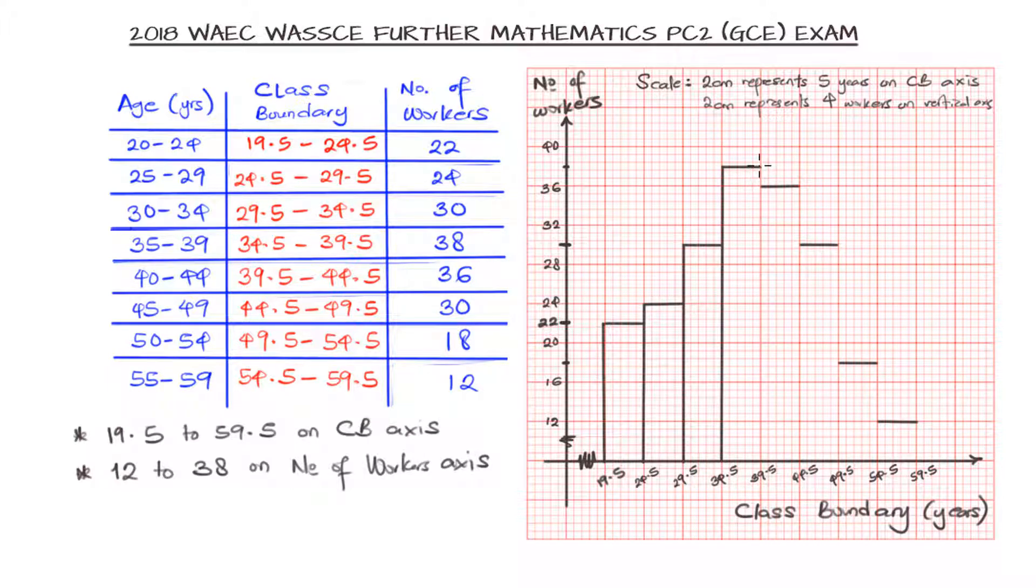And how do we get the mode from that histogram? We look at the highest bar. Then we draw from the two adjoining bars to meet the opposite side of the bar, and the point of intersection of that joining, it will look like X. That will be our modal age. Now we have our histogram already, so let's go ahead to see how we can label this. This is the histogram of the given data. It's always appropriate to label your graph.